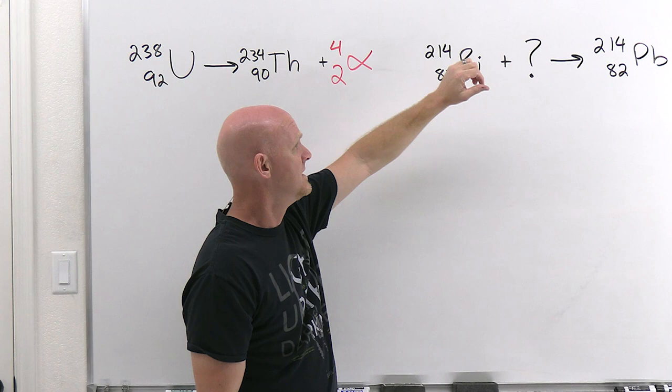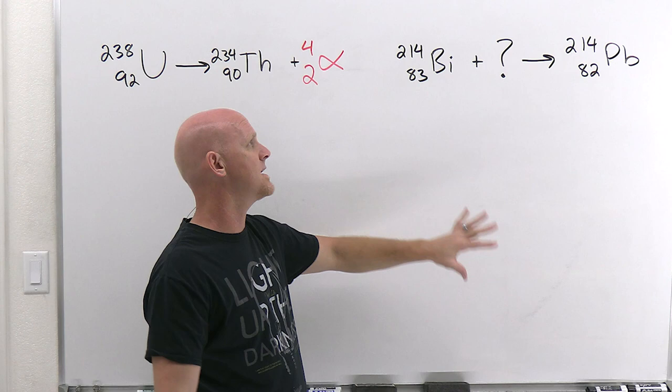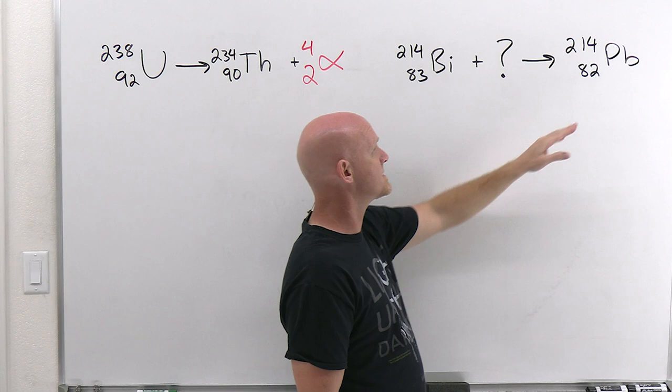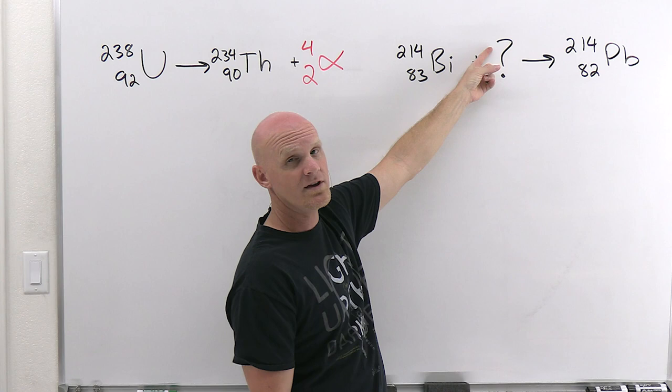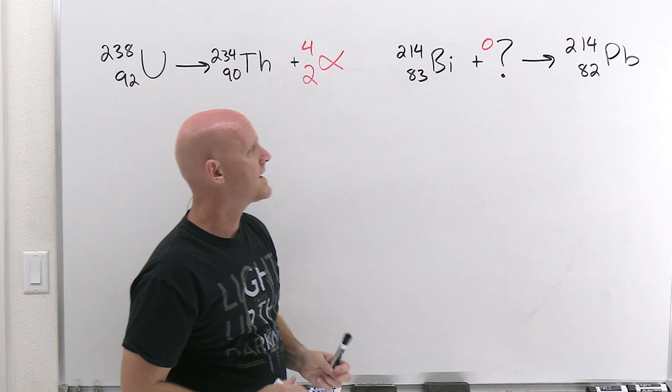Alright, so same fashion over here. So in this case, the mystery particle is on the reactant side instead of the product side, but again, it works exactly the same. We've got to balance the mass numbers on both sides and the atomic numbers on both sides. And so in this case, on the product side, the total mass number is 214. And so the question is 214 plus whatever here has to add up to 214. That must correspond to a mass number of zero.